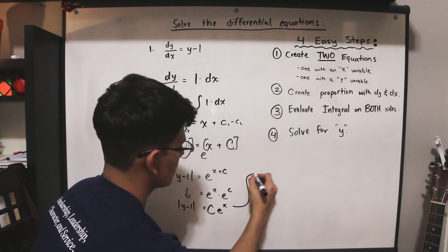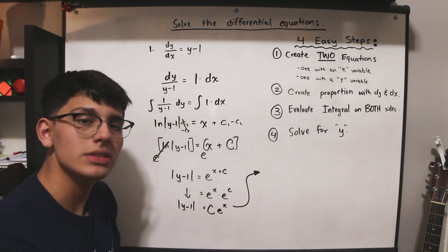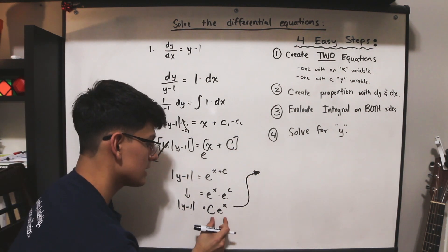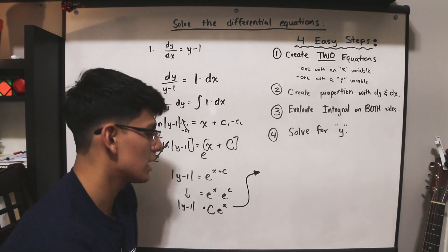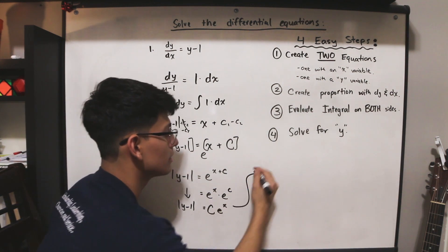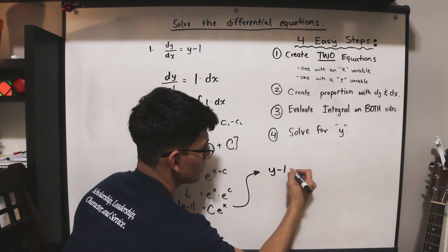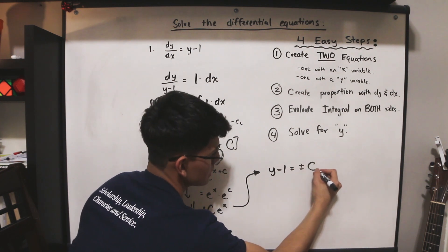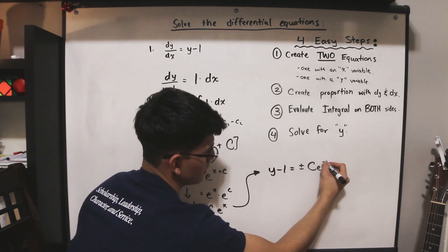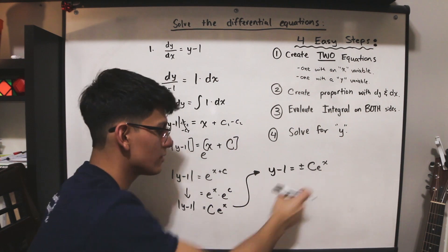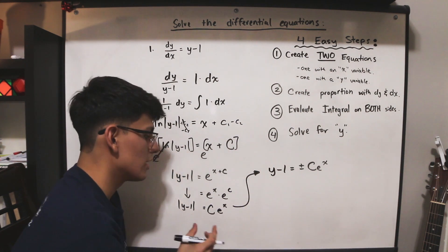Now we're going to move this here. In order to get rid of the absolute value signs, we know that whatever is inside has to be equal to a negative or a positive version of the other side. So we're going to write y minus 1 is equal to plus or minus c e to the x, because we know that anything, whether it's positive or negative, its absolute value will be this.